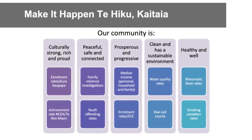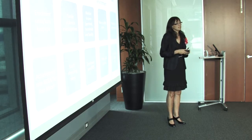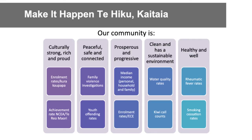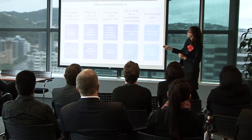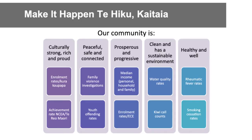Here's a really great example of a recent population accountability framework. This is for a project led by the Ministry of Social Development in Northland, specifically with the community of Te Hiku. The project is called Make It Happen Te Hiku in Kaitaia. It has five population results or outcomes, with indicators associated with each. The outcomes are: our community is culturally strong, rich and proud; peaceful, safe and connected; prosperous and progressive; clean and has a sustainable environment; and healthy and well. Population results or outcomes are high-level aspirational statements for a population. To measure whether those results are occurring, this community has chosen two indicators which map back to each population result or outcome.